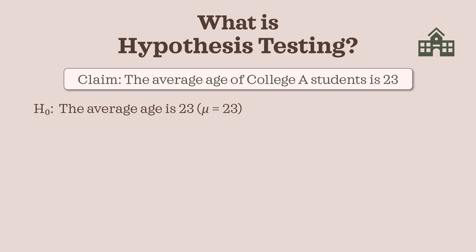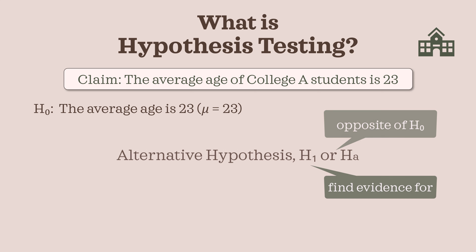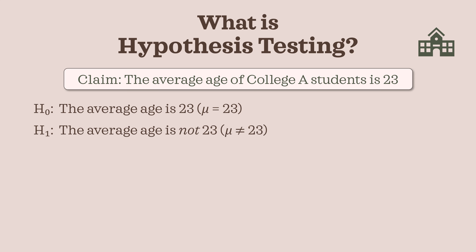On the other hand, we have the alternative hypothesis, H1 or HA. This is the opposite idea — the thing we suspect or we're trying to find evidence for. In this case, it could be that the average age is not 23. This indicates something different is happening, or that the default claim is wrong.